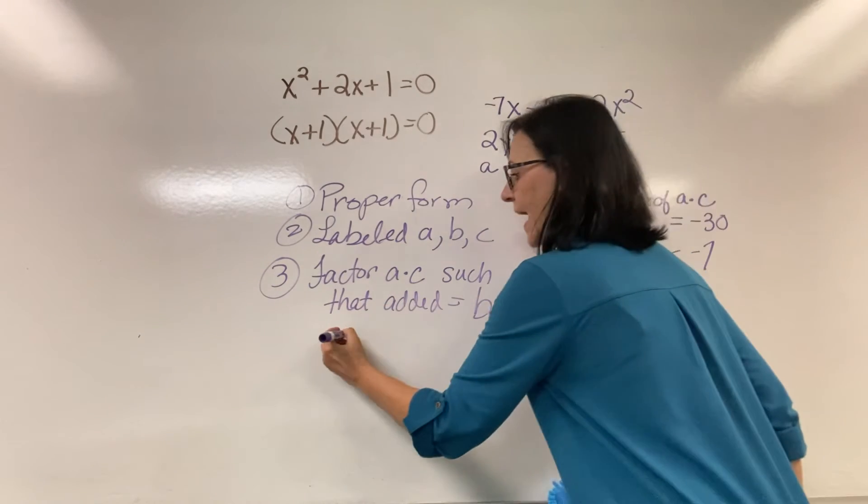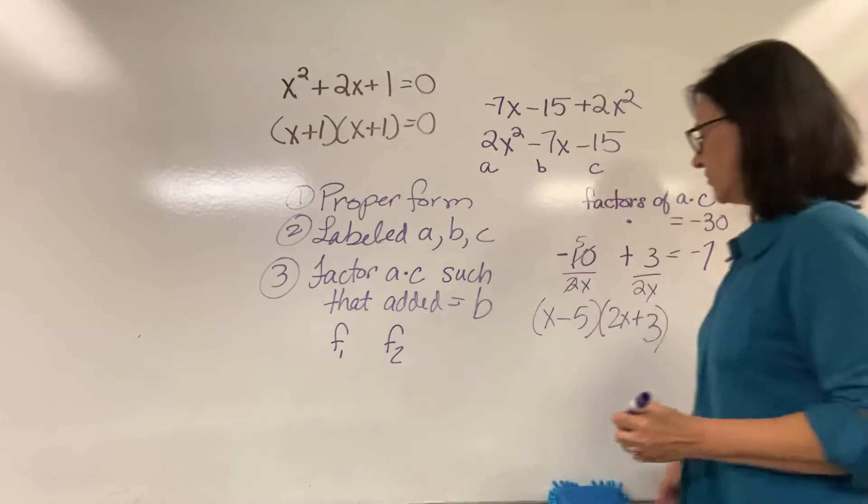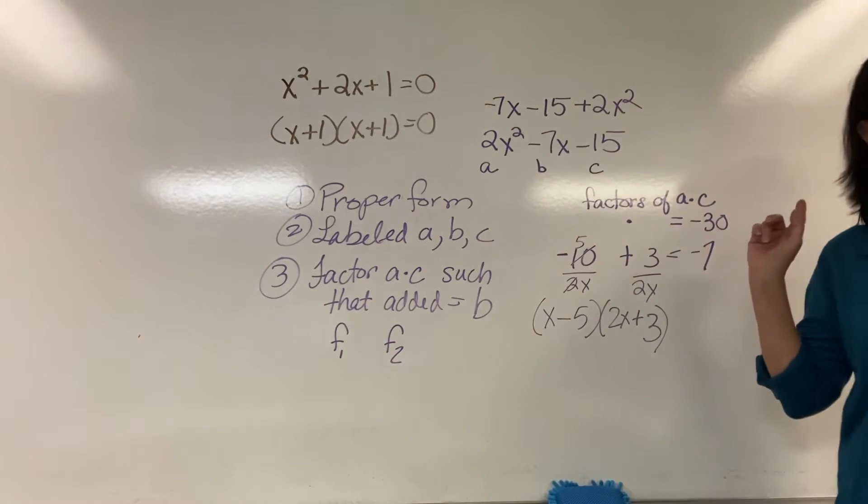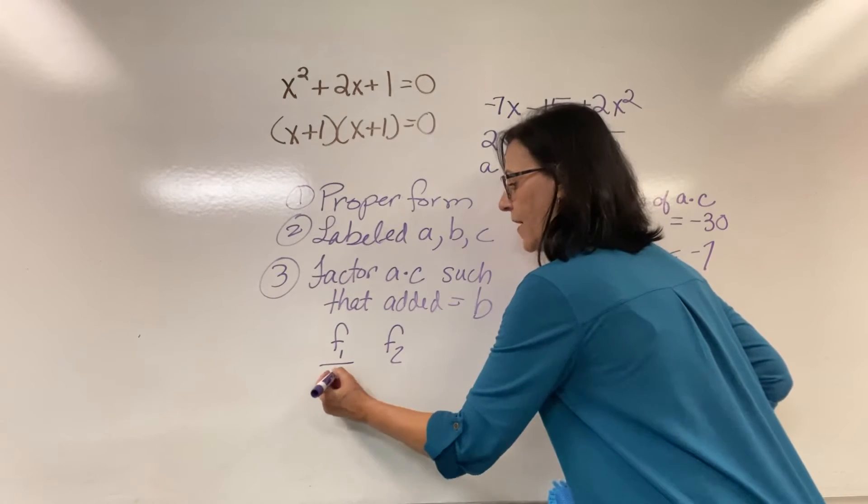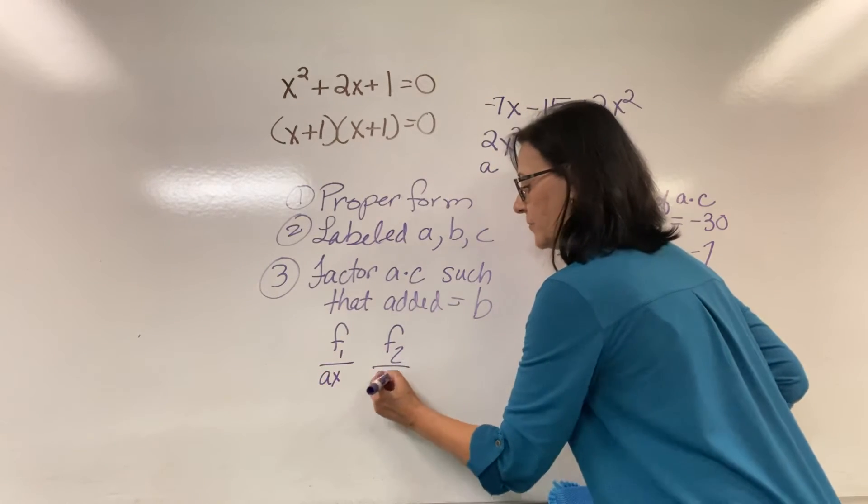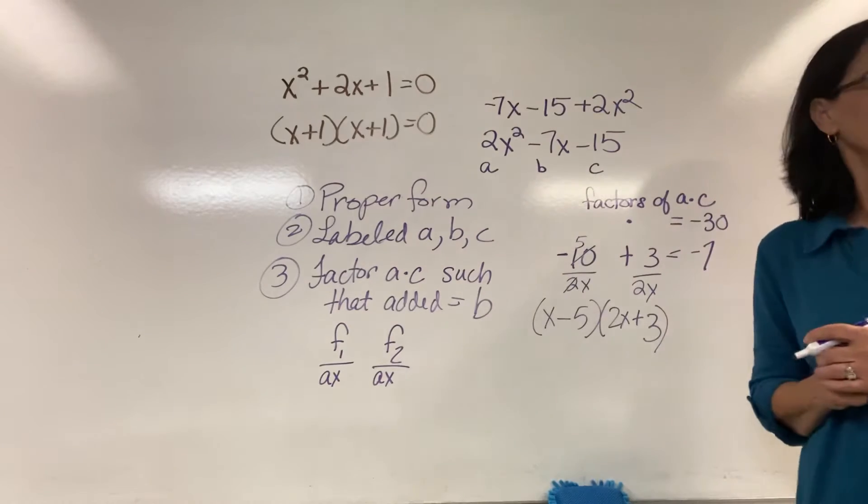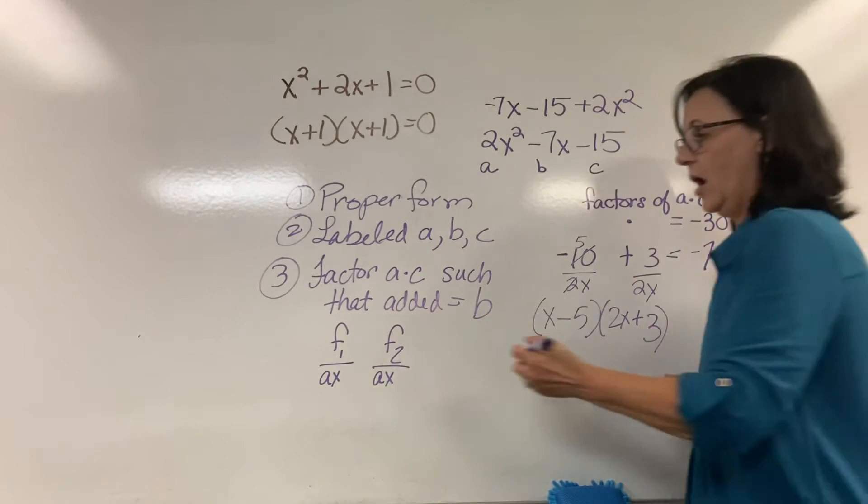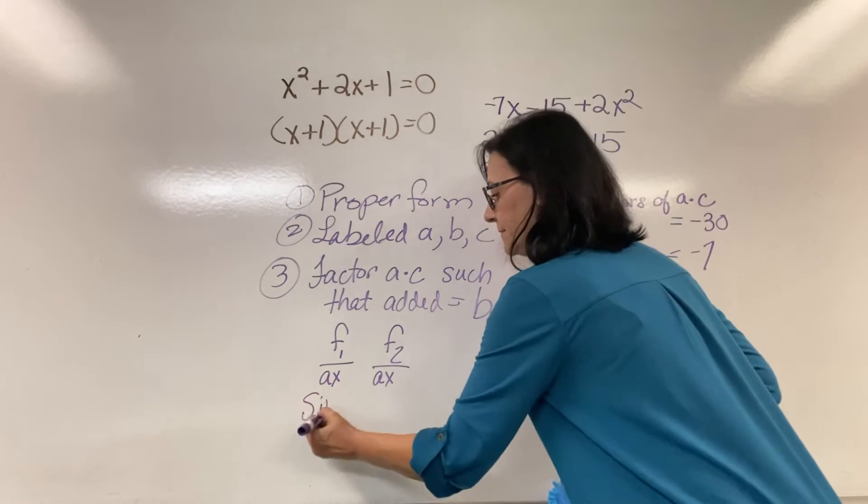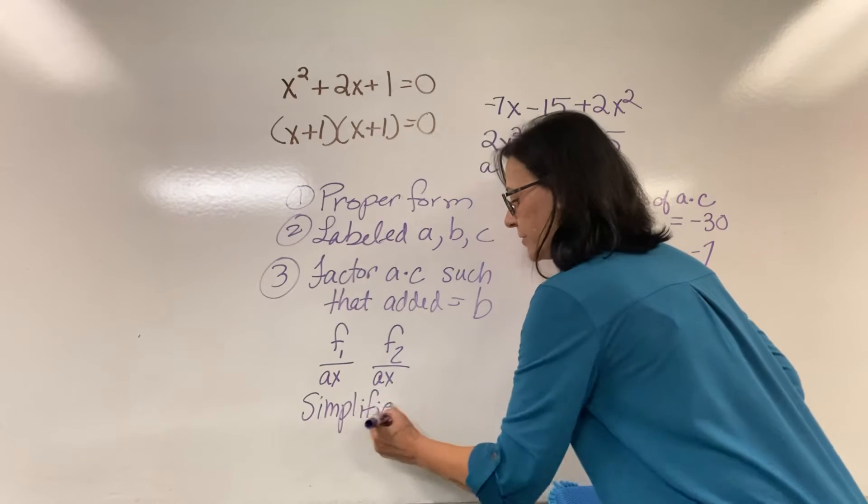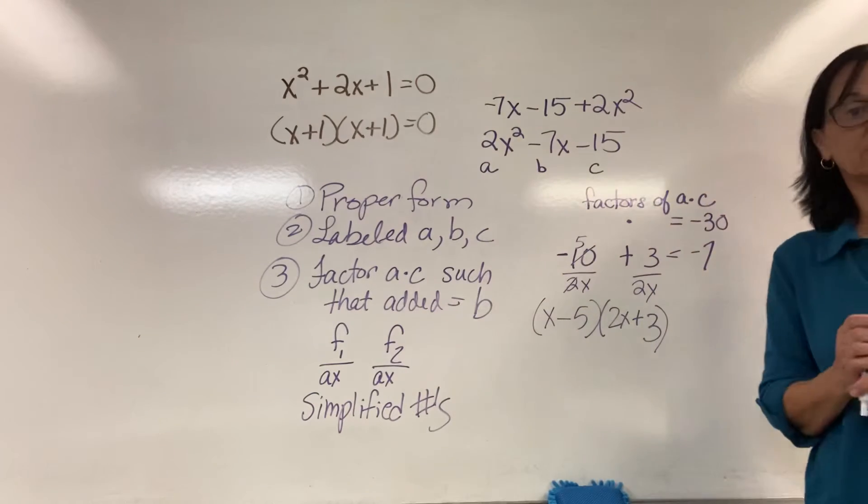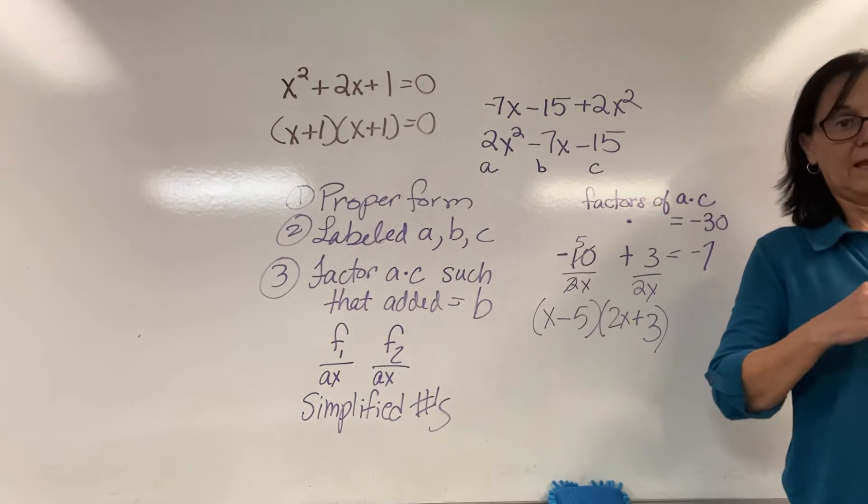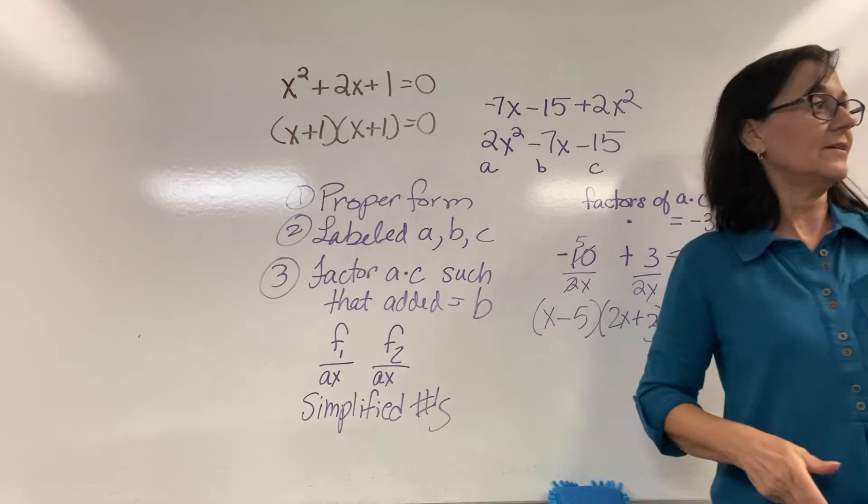Then once we had factor one, factor two, that was the negative 10 and 3. Under those, we put the a value with an x. Then what did we do? We simplified only the numbers. And then we wrote the factors.